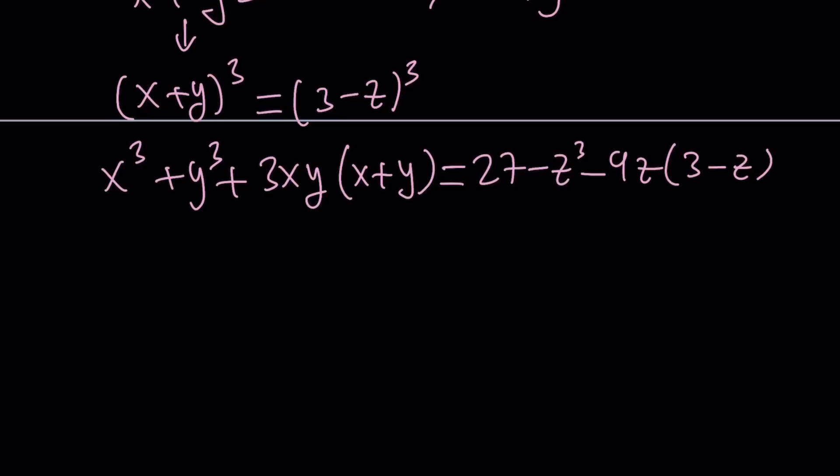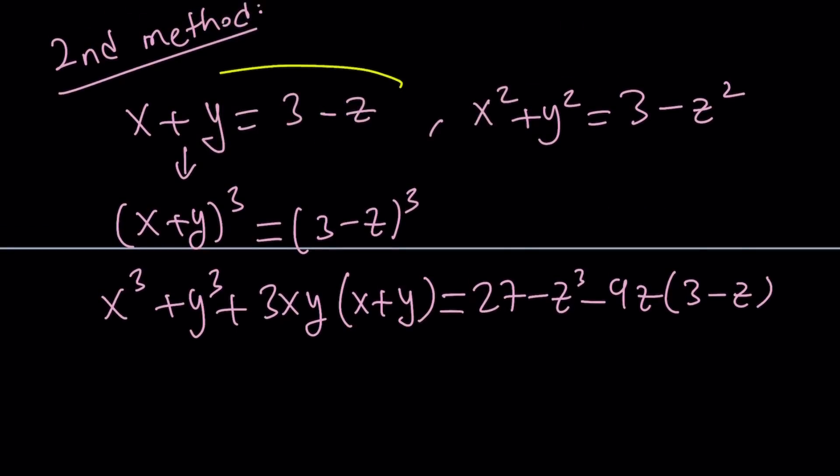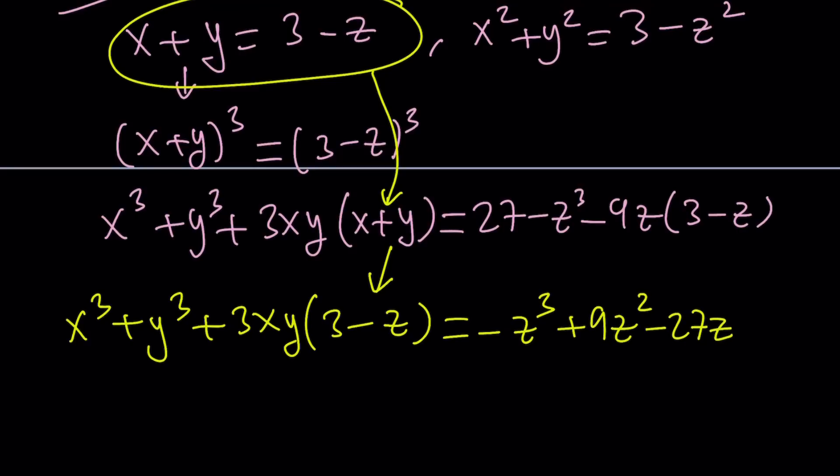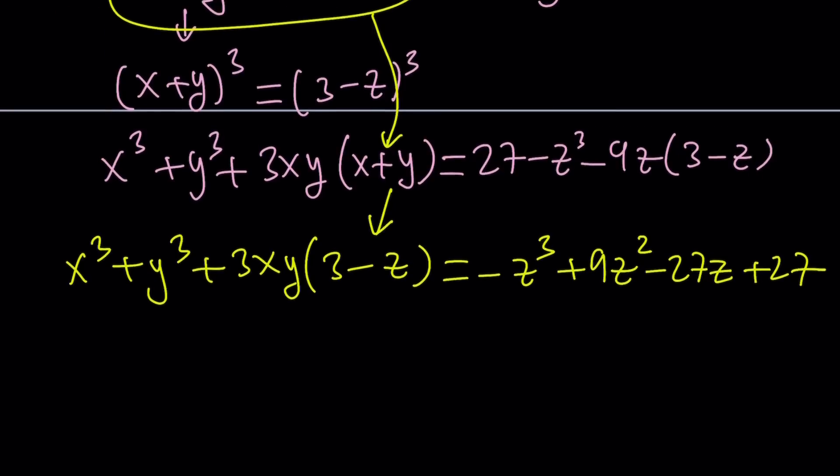Notice that x plus y can be written as 3 minus z, so I can plug it in here. We get 3xy times 3 minus z. And on the right hand side, we get negative z cubed plus 9z squared minus 27z plus 27.